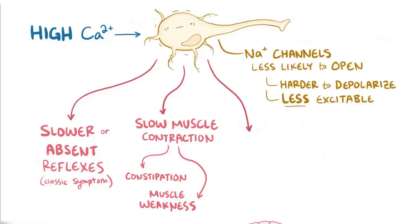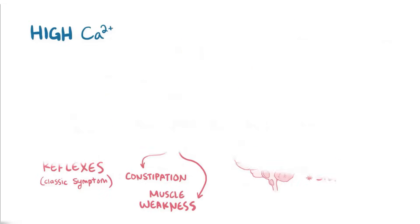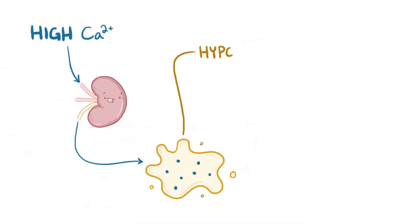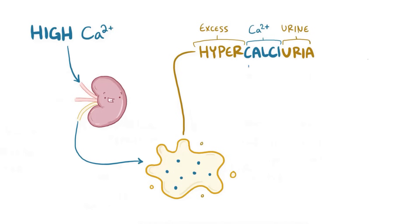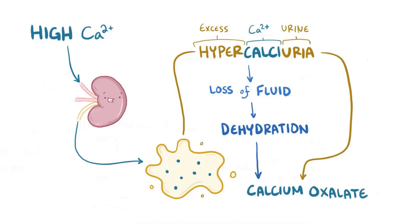The sluggish firing of neurons also leads to slower muscle contraction, causing constipation and generalized muscle weakness. In the central nervous system, hypercalcemia causes confusion, hallucinations, and stupor. In most cases, when there's too much calcium in the blood, the kidneys try to dump it into the urine, causing hypercalciuria, or excess calcium in the urine. Hypercalciuria leads to a loss of excess fluid in the kidneys, causing dehydration, and the combination of hypercalciuria and dehydration can lead to calcium oxalate kidney stones.